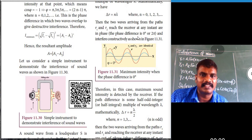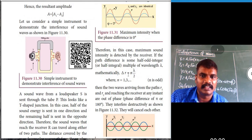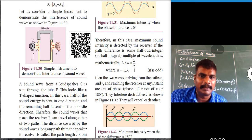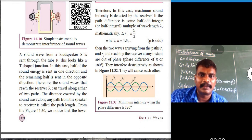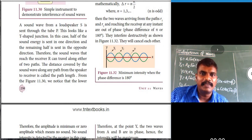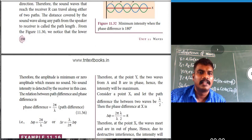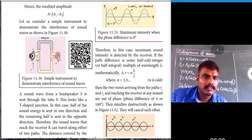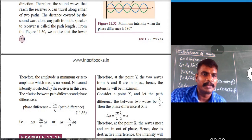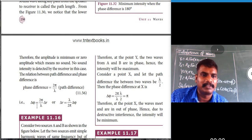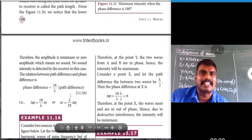If the path difference ΔR = nλ (n = 0, 1, 2, 3, ...), the two waves arrive in phase — constructive interference — producing maximum sound intensity at the receiver. If the path difference ΔR = nλ/2 for odd n (1, 3, 5, ...), the waves are 180° out of phase — destructive interference — and no sound is produced, since the amplitude becomes zero.